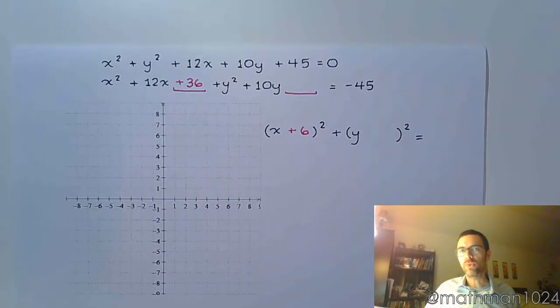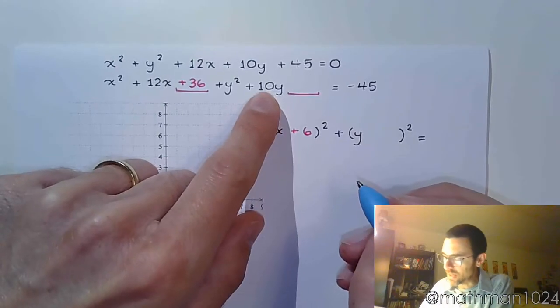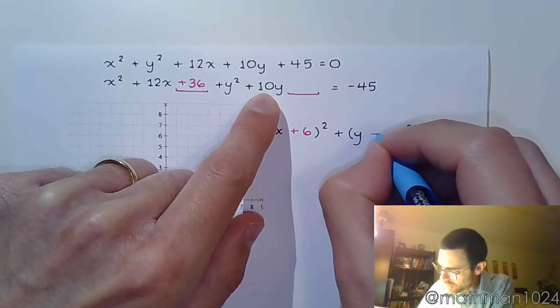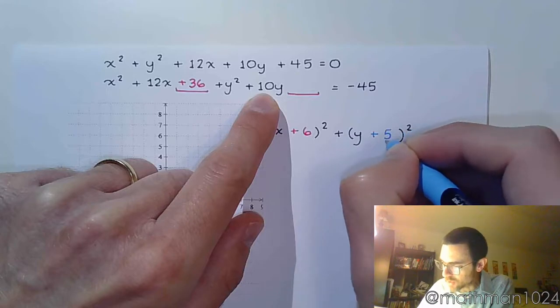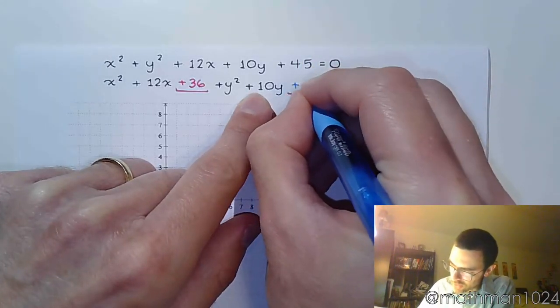And you're going to do something very similar for the y's. Do half of the 10. So that comes in here as a 5, positive 5. Square the 5, and that's plus 25.